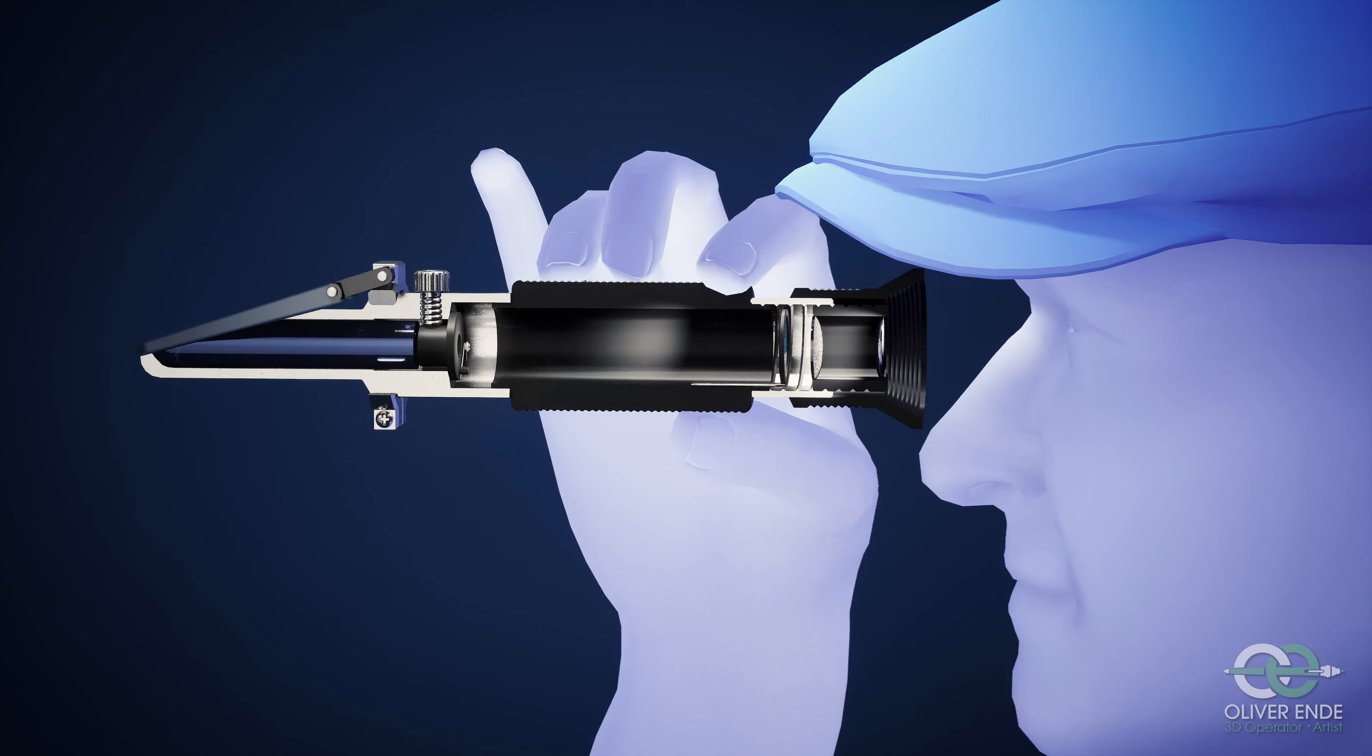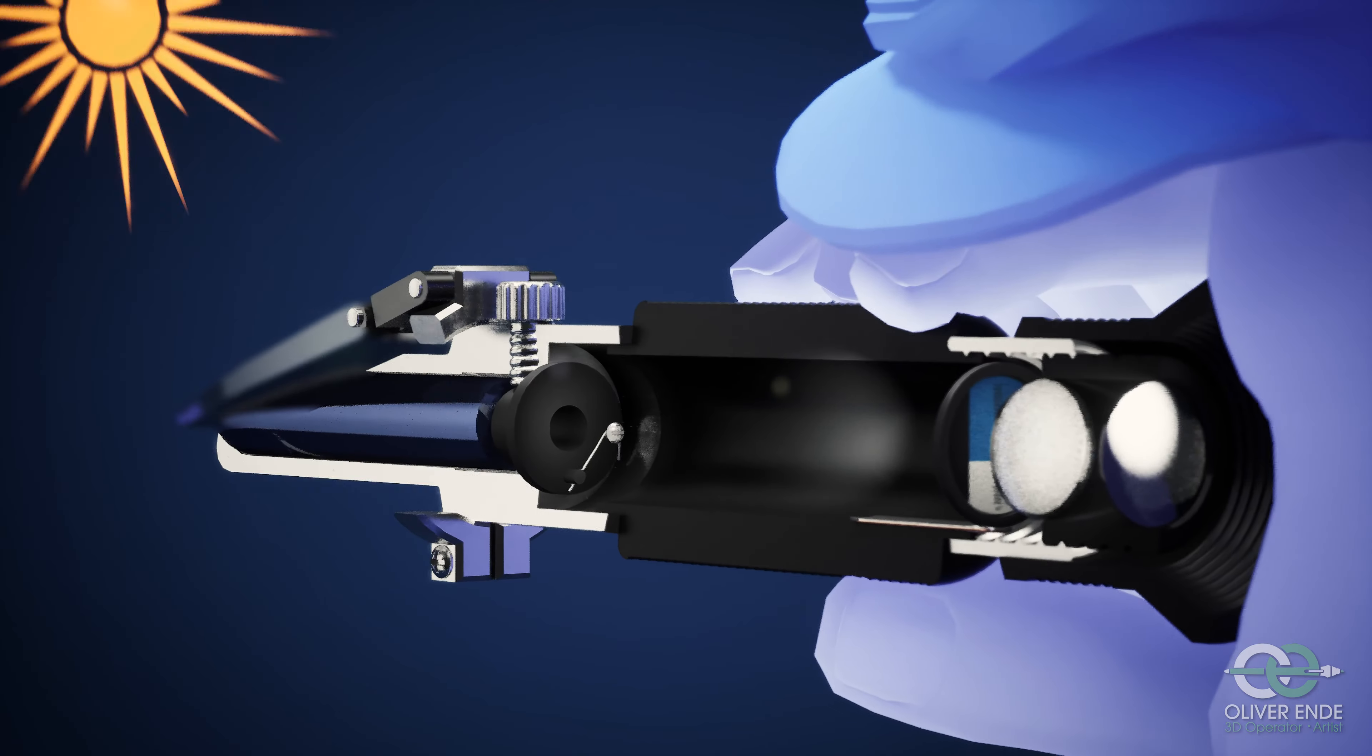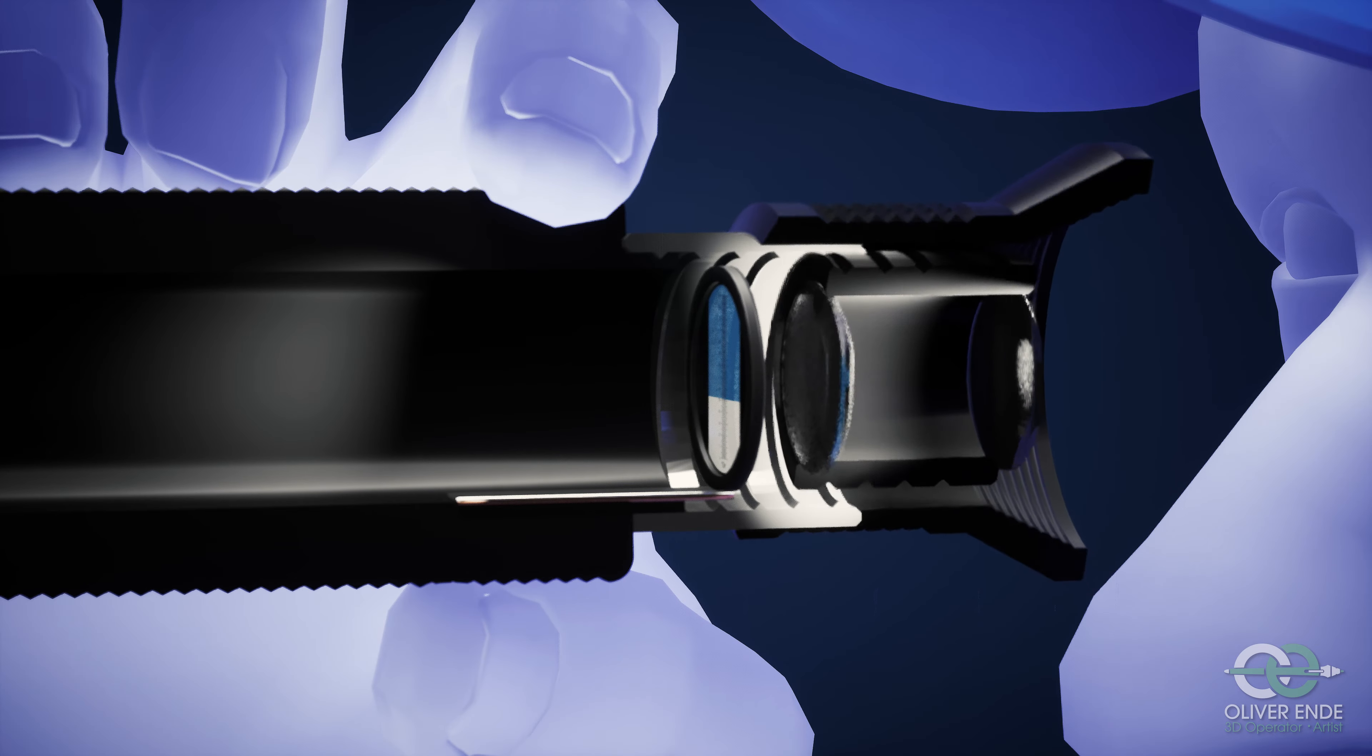The instrument is held against the light. The observer looks through the eyepiece. By turning the eyepiece, the focus setting can be perfectly adjusted to the respective eye.